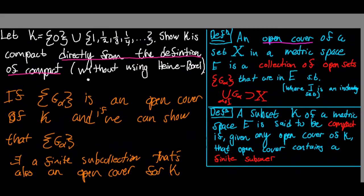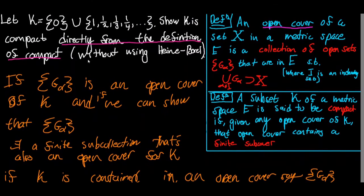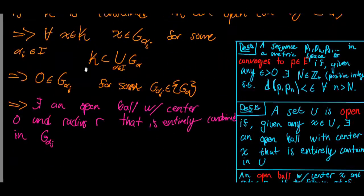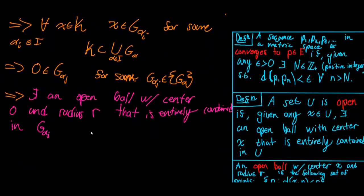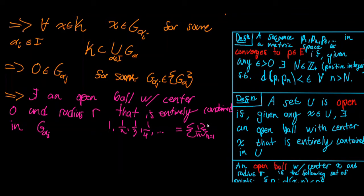I've proven in a separate video — which I'll link in the description and in the top right corner — that the set composed of the sequence one, one-half, one-third, one-fourth, and so on, which I can write generally as the sequence 1/n from n equals one to infinity, converges to zero.